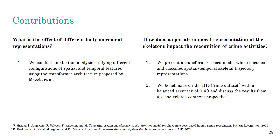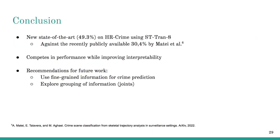We also benchmarked the HR Crime dataset with a balanced accuracy of 0.49. To conclude, we benchmarked on the HR Crime dataset given the complex scenarios that are presented. Our results indicate that our proposed model competes in performance while improving the interpretability of the transformer framework by providing insights into the kinetics related to a crime-related action. For future work, we want to incorporate this fine-grained information for crime prediction. We would also like to explore the grouping of information, such as the grouping of joints.